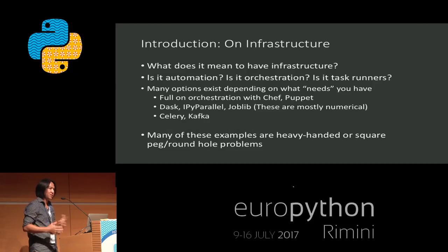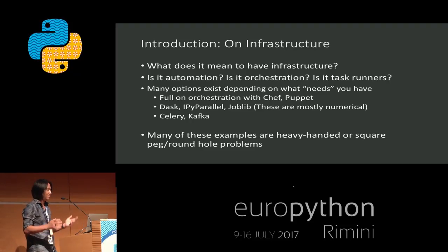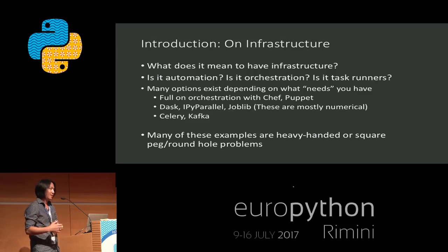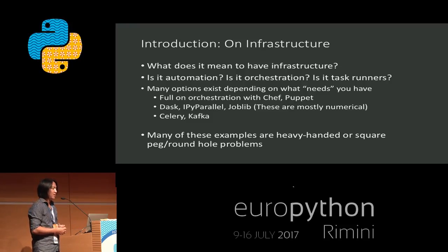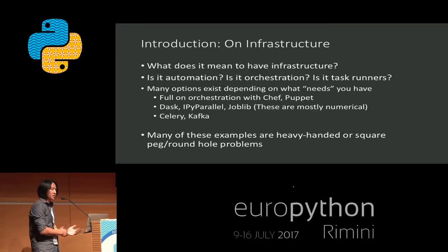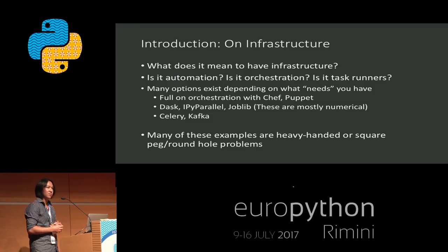On the term of infrastructure — I know this term gets thrown around a lot — what exactly is infrastructure? Is it automation? Is it orchestration? Are you talking task runners or distributed task runners? Many options actually exist in the Python world for what you may need. You can have Dask, IPyParallel, and JobLib, which are more distributed task runners for numerical work. You have orchestration with Chef and Puppet. You have Celery and Kafka, which are also heavily tied in with Python and are more automated task scheduler runners.